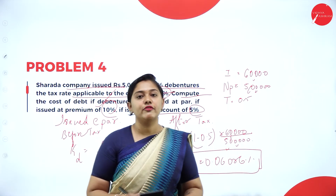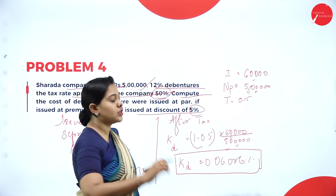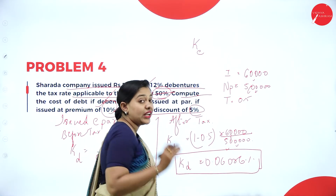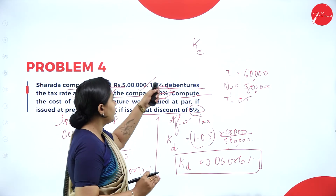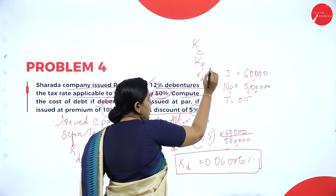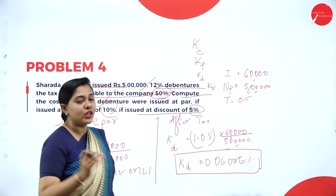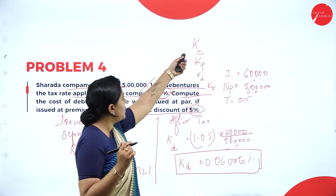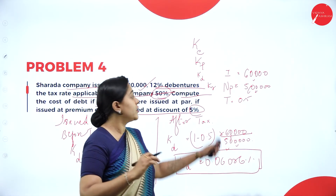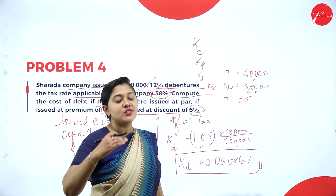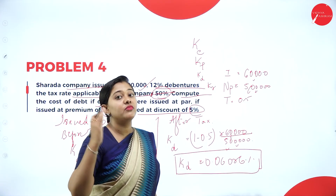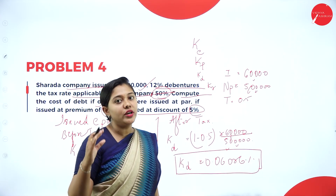One more thing to note while writing the notation: subscript means it is written below the letter. Cost of equity is written as K subscript E. Similarly, cost of preference, cost of debt, cost of retained earnings — all use subscript notation. When it comes upward, it is superscript; when it is below, it is subscript. You should understand this clearly.